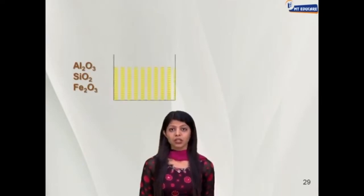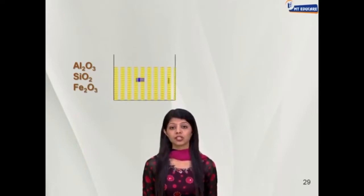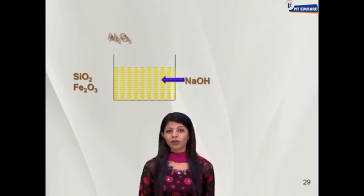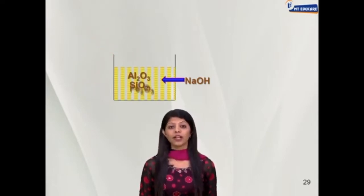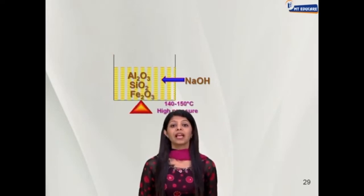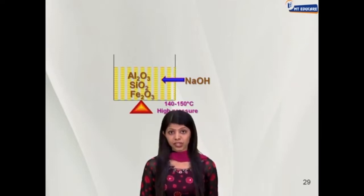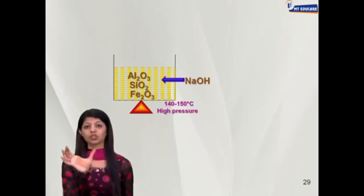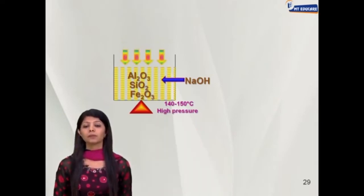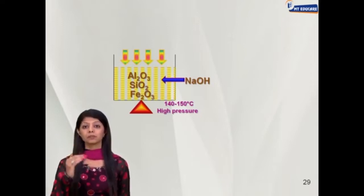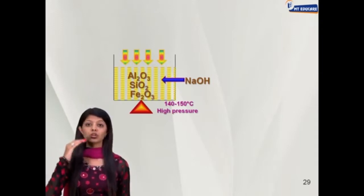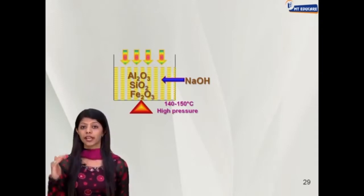Now let's start with Bayer's process. We take the bauxite ore, crush it into powder, and place it in a beaker containing caustic soda — that is NaOH, sodium hydroxide. We add the crushed ore into the sodium hydroxide liquid. Next, we heat it at 140 to 150 degrees Celsius under high pressure. To create high pressure, we cover the tank with a heavy metal lid. This tank is called a digester.